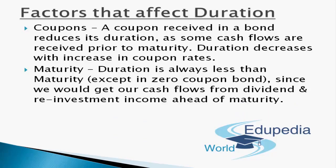The second factor is maturity. Duration is always less than maturity except for zero coupon bonds, where no coupons are received during the lifecycle and the entire amount is paid at maturity — so duration equals maturity. For coupon bonds, income is received before maturity through coupons and reinvestment. As maturity increases, the due date of face value receipt is pushed further out, so duration also increases. Throughout the bond's life, duration continuously decreases as time to maturity decreases.